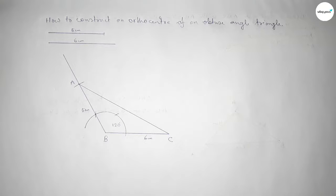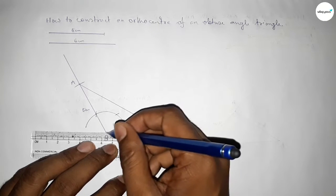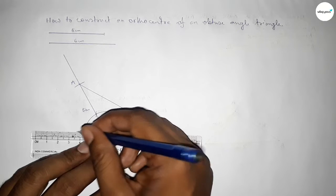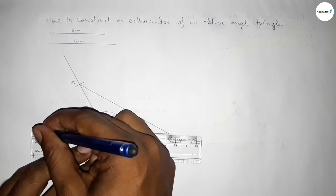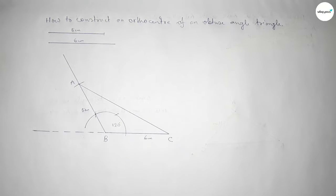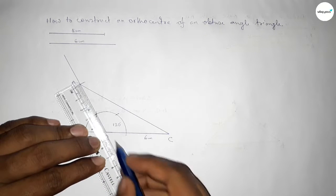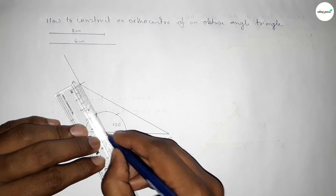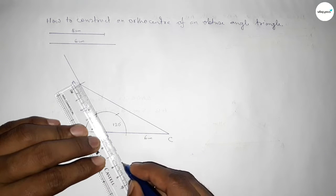Now we have to extend the line BC on this side using a scale, and also extend the line AB using a scale, in order to draw the perpendicular lines.